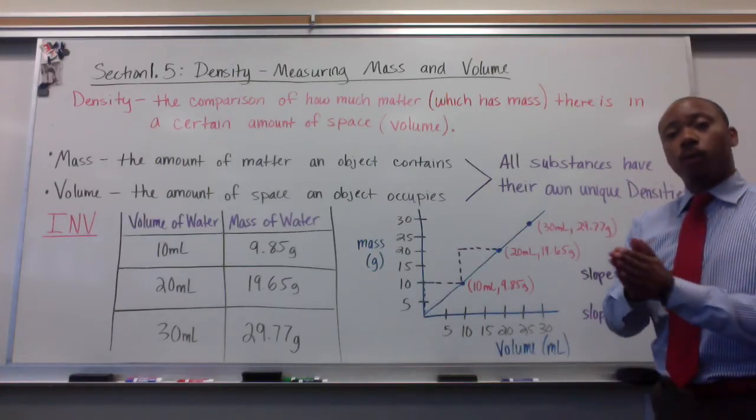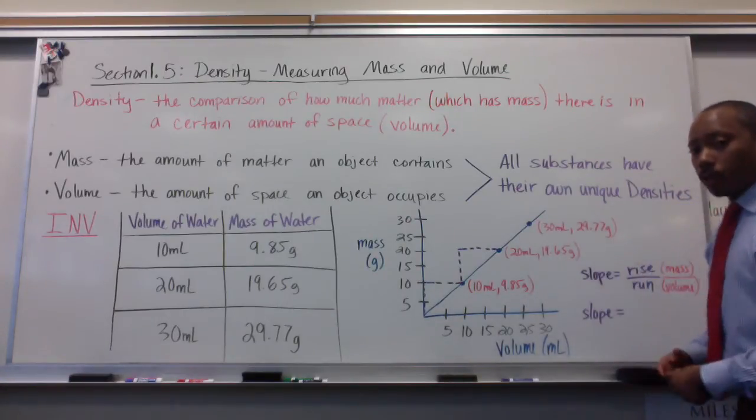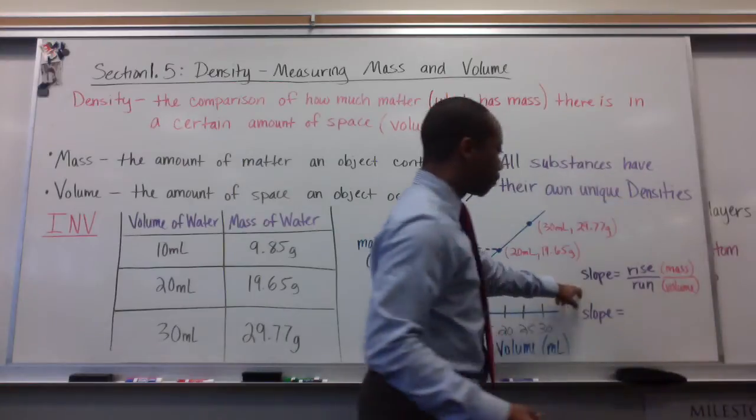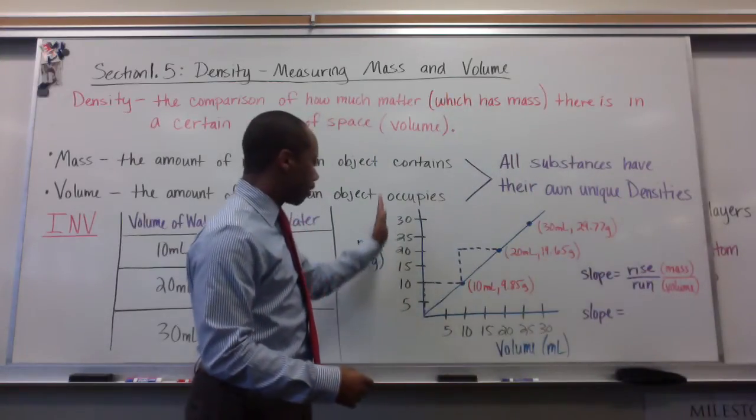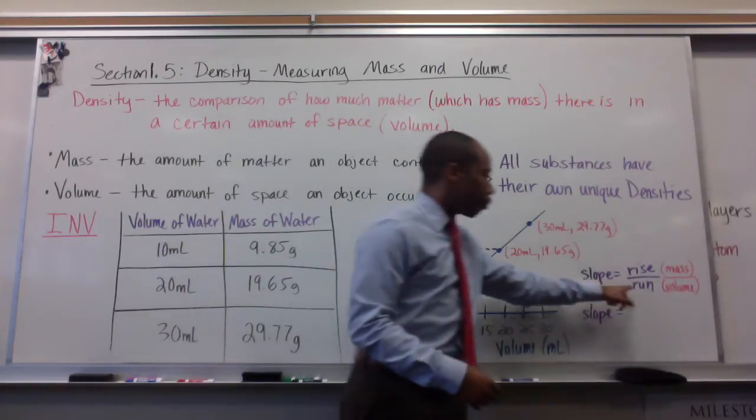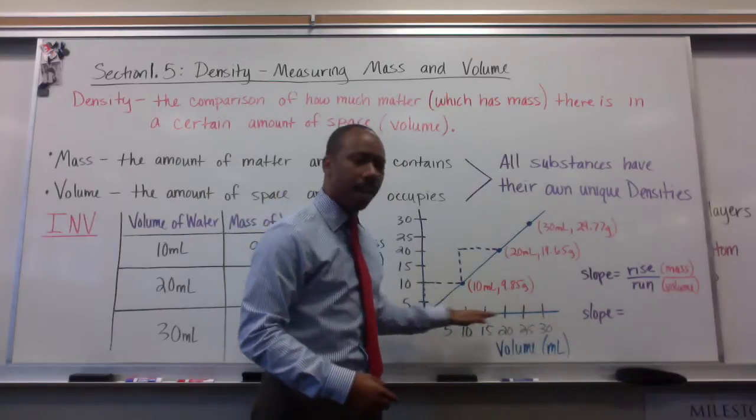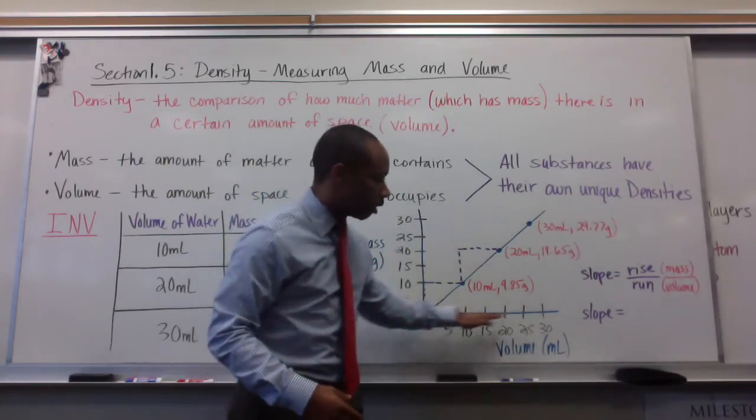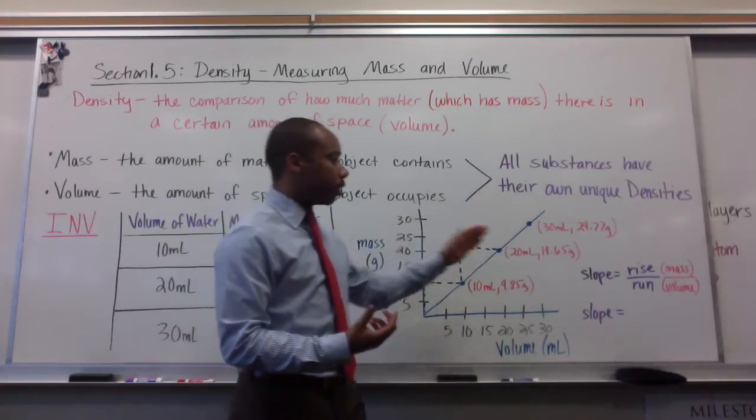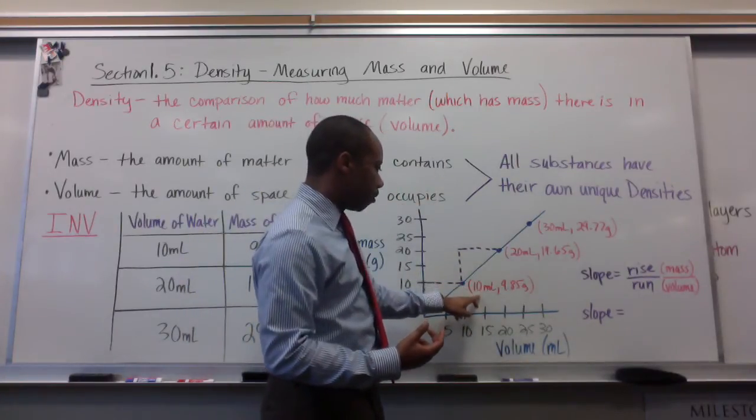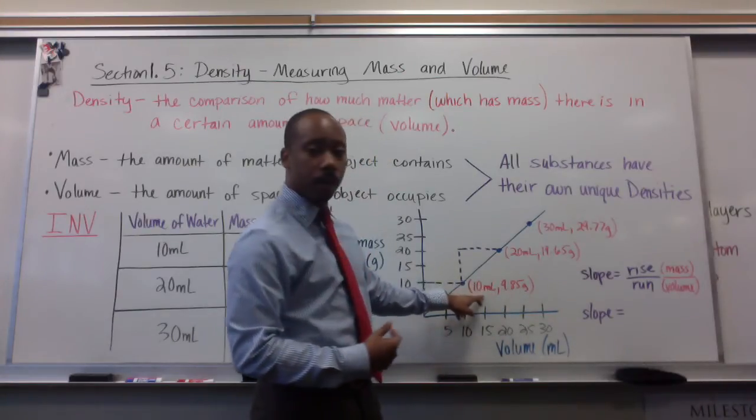We can verify that by using the fact that the slope of a straight line equals the rise over the run. In this case, the rise is our mass value. That's the y-axis. Over the run, which is represented by our volume, which is in the x-axis. This is the y-axis. This is the x-axis. So if we divide that, rise divided by run, we get 9.85 grams divided by 10 milliliters.